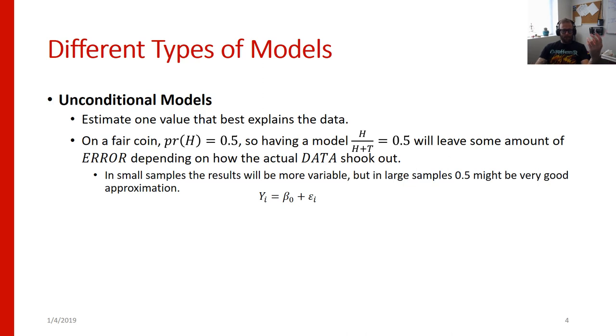But on average it's going to be very close to 0.5. So in very large samples estimating a probability of 0.5 is probably going to be a good approximation. Certainly we might get a few runs of heads in a row if we only do 10 coin flips or runs of tails in a row if we only do 10 coin flips. But if we did a hundred or a thousand or ten thousand it's going to get closer and closer and closer to that 0.5. So 0.5 would be a very good unconditional model for the probability of heads on a coin flip.